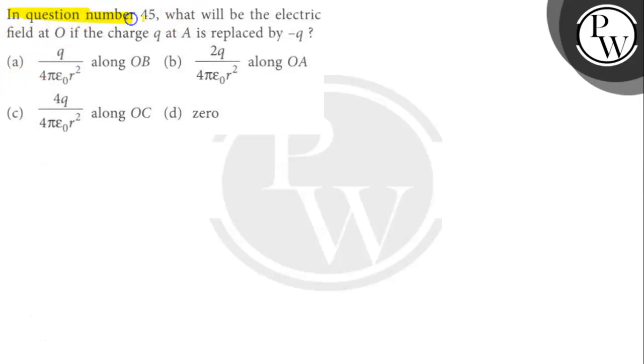The question says: In question number 45, what will be the electric field at O if the charge Q at A is replaced by -Q?